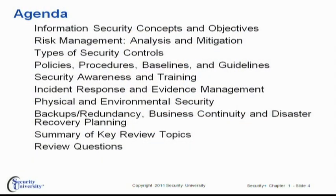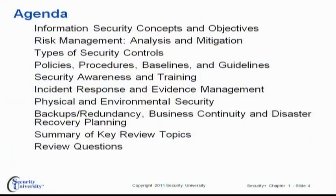Let's take a look at the agenda for this chapter. First of all, we want to start with the foundation of information security — concepts and objectives. A key cornerstone in any information security program is identifying where you're at risk and determining practical, cost-effective ways to mitigate that risk. We also want to look at the four main categories of information security controls to categorize how we actually protect ourselves from these various risks.